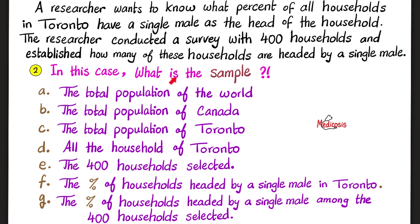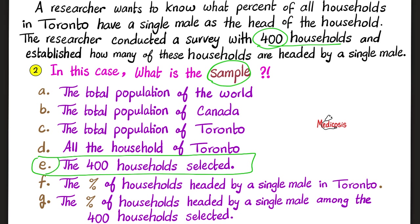The second question is, in the same case, what is the sample? Is it A, B, C, D, E, F, or G? Please pause the video. Why do we need a sample in statistics? Because we do not have the time, energy, or money to interview all of the households in the city of Toronto. So to maintain our sanity, we're going to choose a random sample that is representative of the population of Toronto. The sample will contain only 400 households, so the answer is choice E.